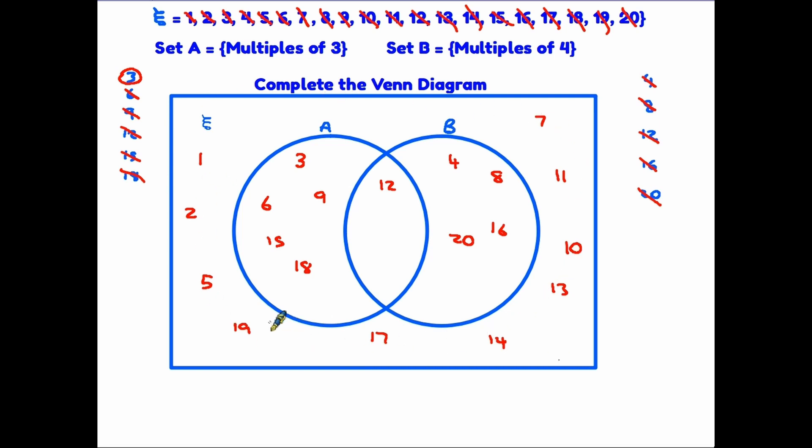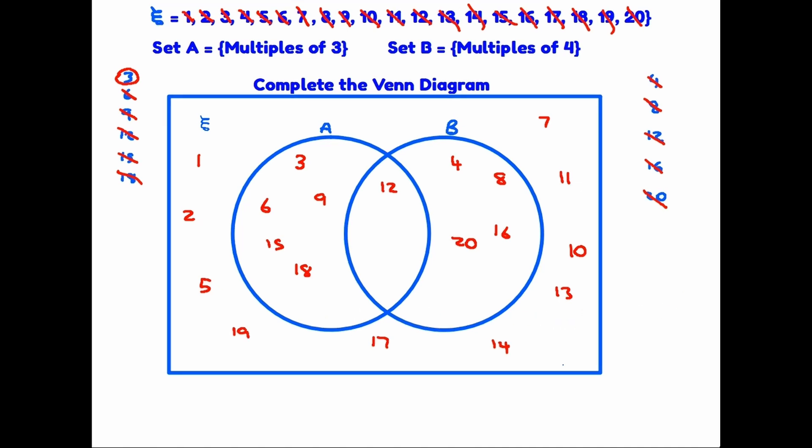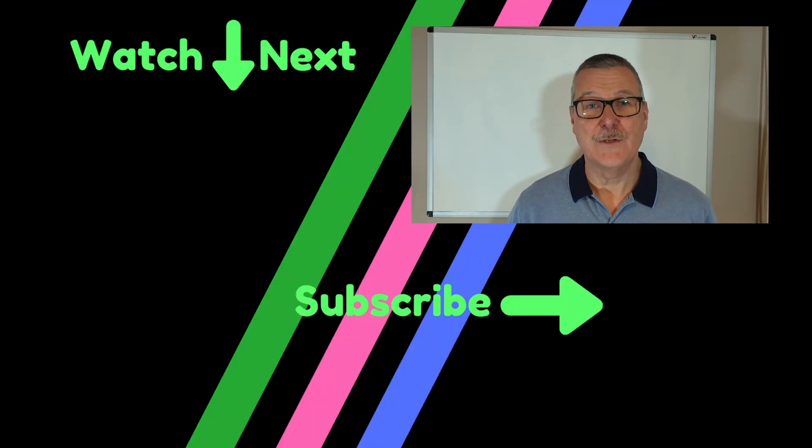You'll notice I've written the numbers randomly in the space — they don't have to be in a particular order as long as they are within the correct area of the universe. Once you understand what union and intersect mean, the questions are not too bad in an exam. It's just a matter of sorting the numbers out and placing them in the right area. For probability questions, you simply count the numbers in the relevant region — for instance, the probability of randomly selecting a number that is only in set B: count them — there are four — so the answer is 4 out of 20 total.